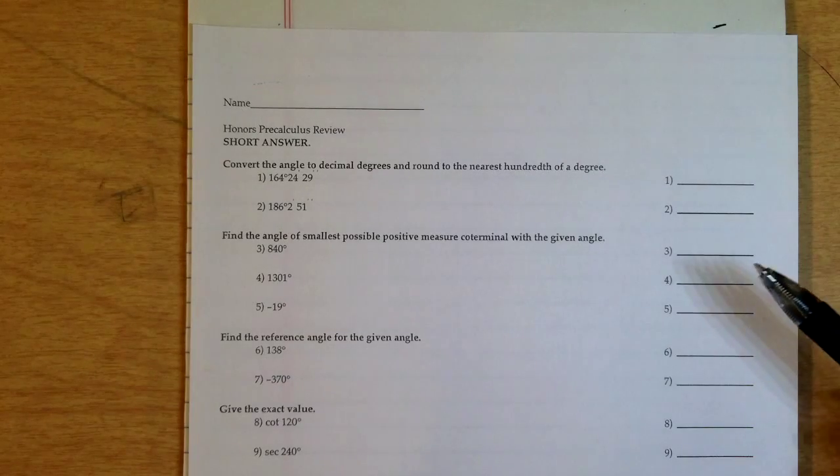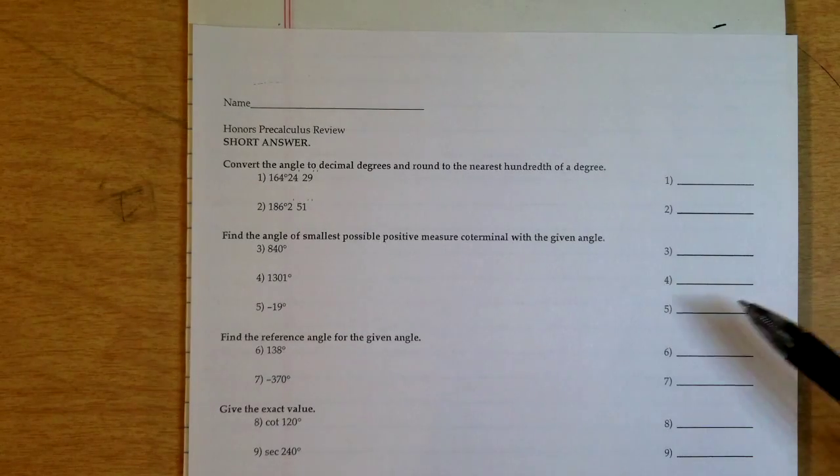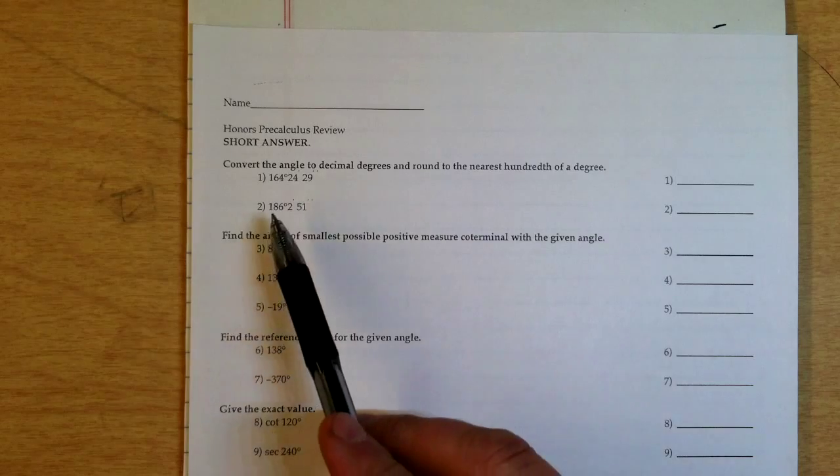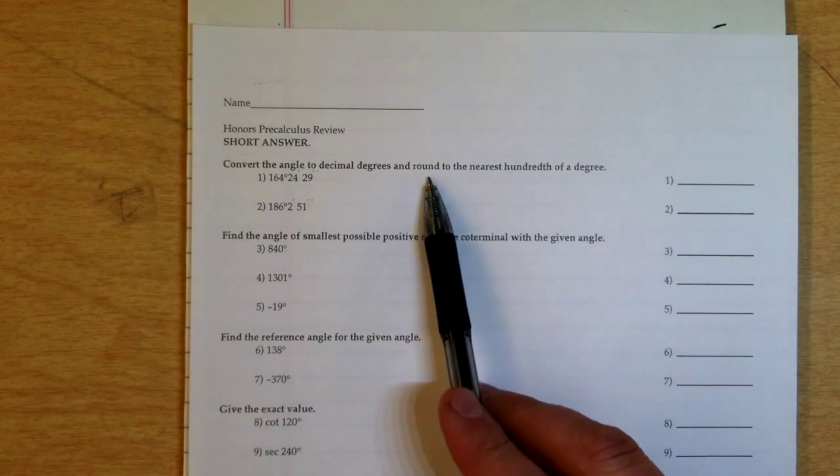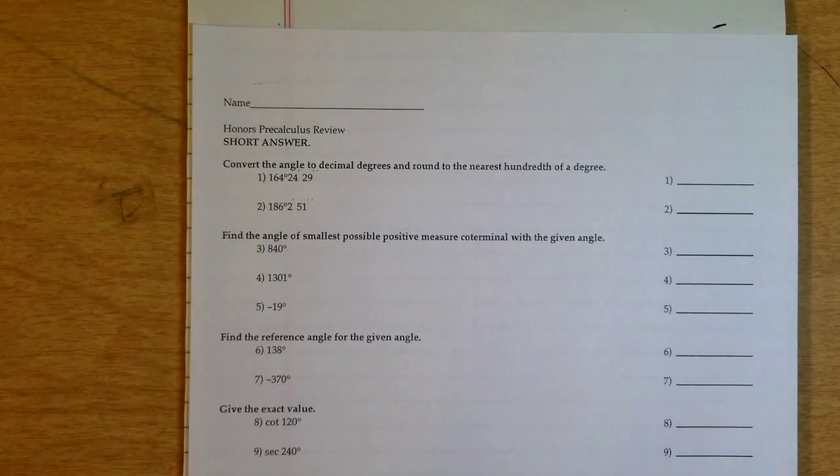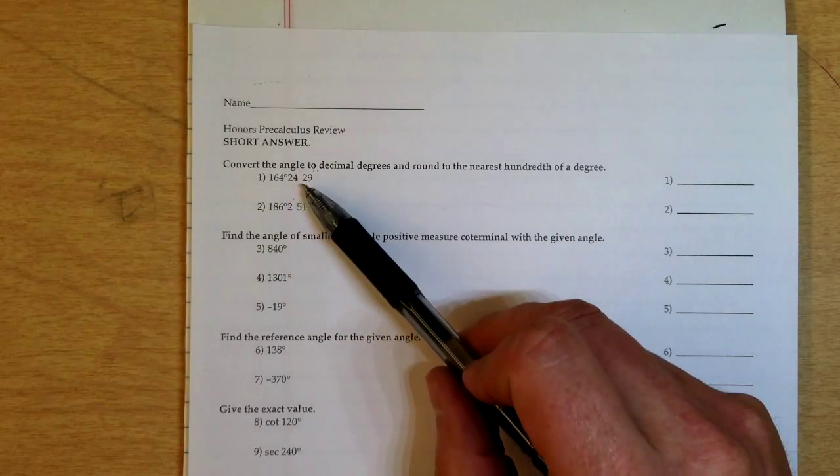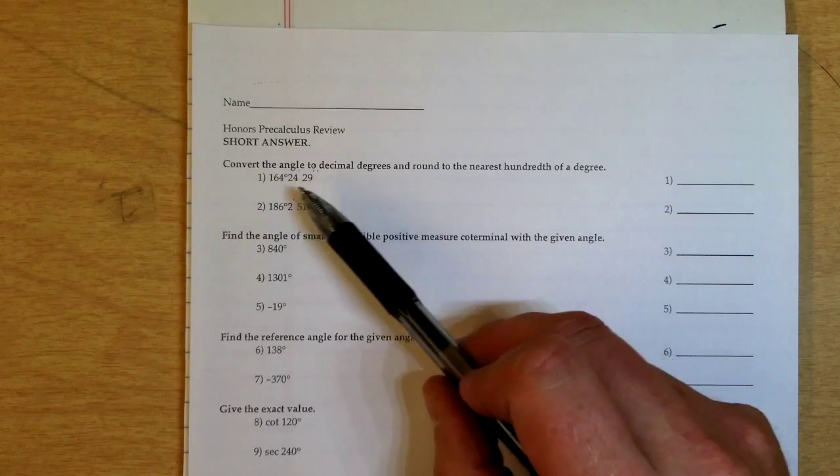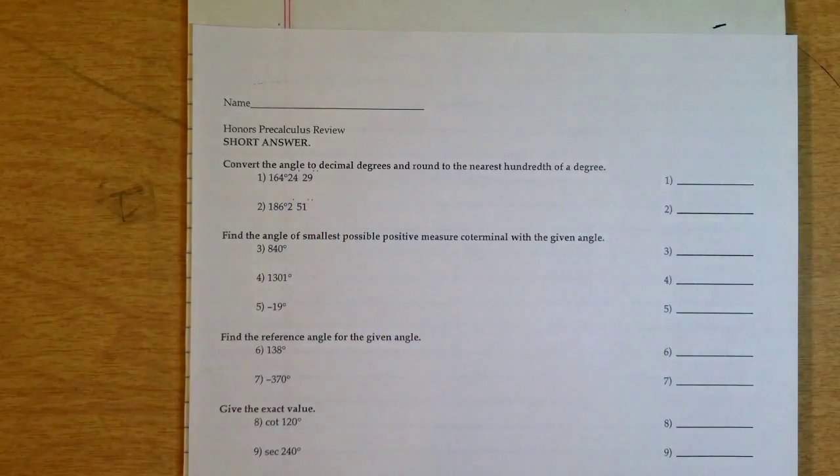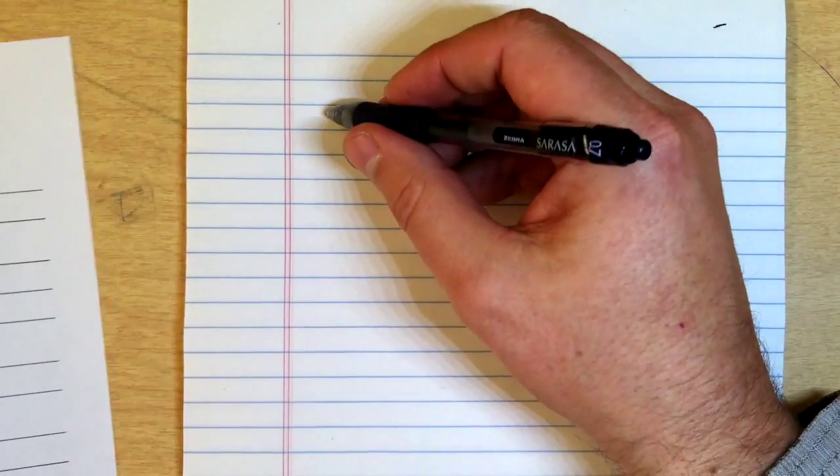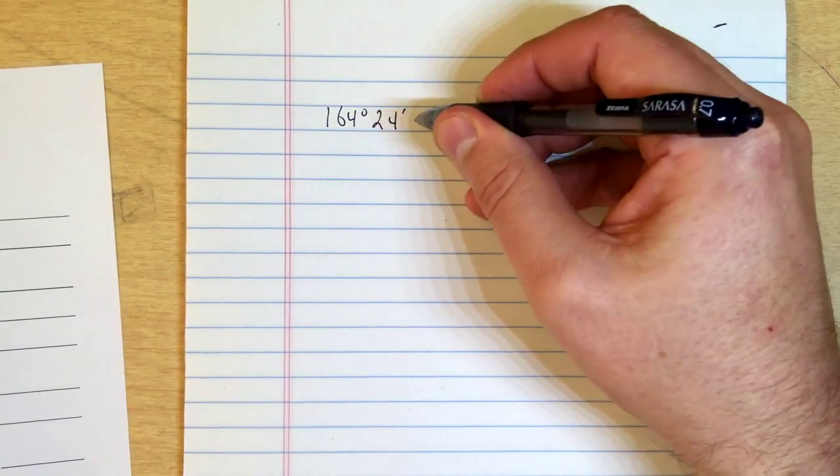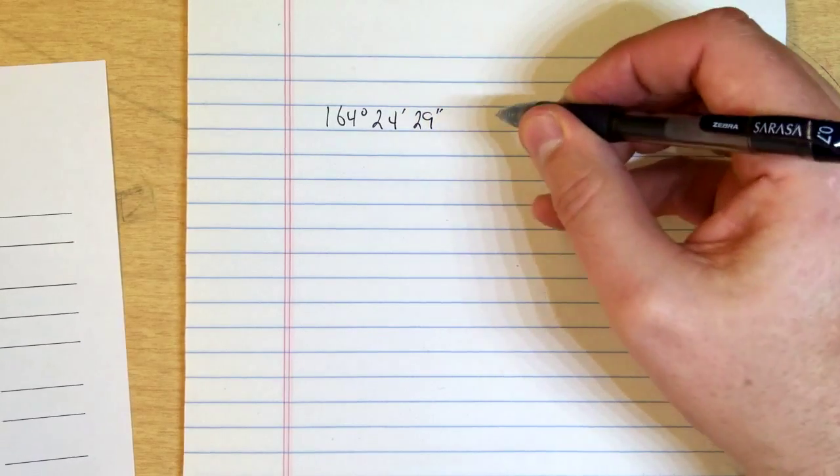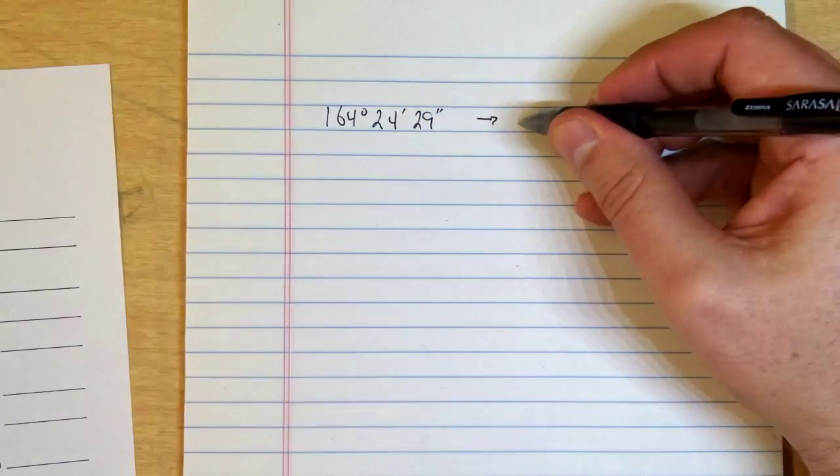This is the honors pre-calculus final exam review for 2013. We're looking at number one and two: convert the angle to decimal degrees and round to the nearest hundredth of a degree. We have an angle in degrees, minutes, and seconds—that's 164 degrees, 24 minutes, and 29 seconds.